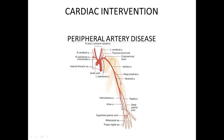On the medial side you have the ulnar artery. These two blood vessels coalesce and meet at about the antecubital fossa, forming the brachial artery. The brachial artery then becomes the axillary artery, and the axillary artery forms the subclavian. On the right side you have the right subclavian; on the left side you have the left subclavian.